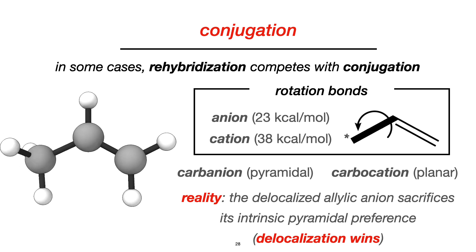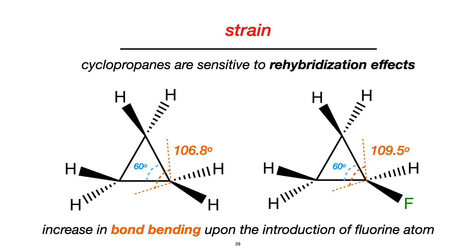The last effect we will talk about is the modulation of strain in cyclic compounds. Since cyclopropanes are sensitive to rehybridization effects because of their unusual hybridization, we can easily change their reactivity as we increase the s character of the carbon–carbon bonds by substitution of hydrogens by a more electronegative substituent. Here I'm showing the cyclopropene substituted by a fluorine. As the bond bending increases, the strain energy difference also increases, and this fact can help us to model and design cyclic compounds.